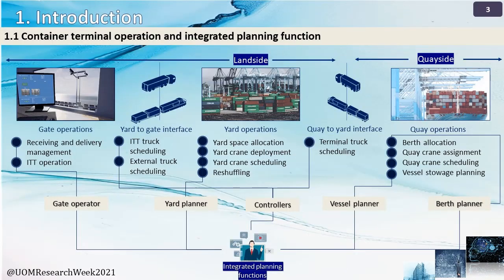We can identify two main planning areas as land site and key site in seaport container terminals. Key operation in key site, and yard and gate operation in land site can be identified as separate planning functions. Berth planner, vessel planner, controller, yard planner, and gate operator can be identified as critical human characters in this planning system.